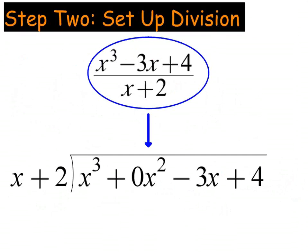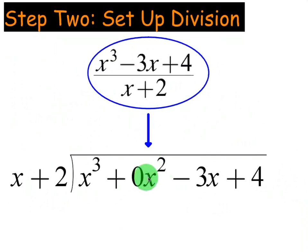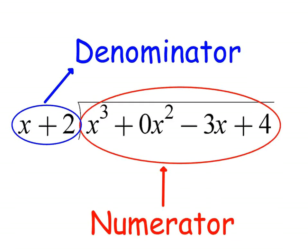Next, we're going to set up the division problem. You're going to put the denominator to the left of the division bar, just like if you were doing 9 divided by 3 — you'd put the 3 here and the 9 there. So you're putting the denominator to the left of the division bar, and you're putting the numerator with the missing exponent — the 0x squared — inside of the division bar.